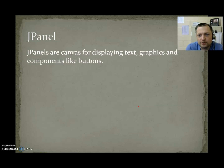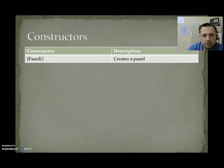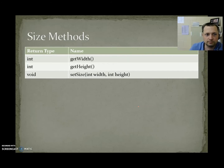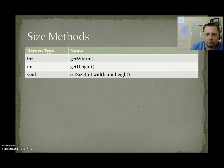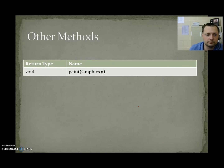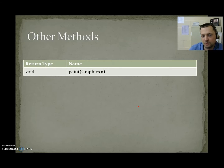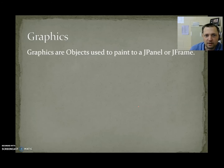JPanels are canvases for displaying text, graphics, and components like buttons. The constructor for a JPanel is JPanel(). Methods include getWidth, getHeight, and setSize — you send it a width and height and it becomes that size. The paint(Graphics g) method is what we use for actually drawing things to the screen. Graphics objects are used to paint to JPanels and JFrames.